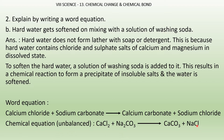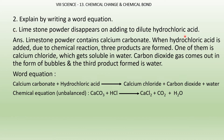Unbalanced equation: CaCl2 + Na2CO3 → CaCO3 + NaCl. Next: limestone powder disappears on adding to dilute hydrochloric acid. Limestone contains calcium carbonate. When HCl is added, three products form: calcium chloride (soluble in water), carbon dioxide gas (seen as bubbles), and water. Word equation: calcium carbonate + hydrochloric acid → calcium chloride + carbon dioxide + water. Unbalanced: CaCO3 + HCl → CaCl2 + CO2 + H2O.